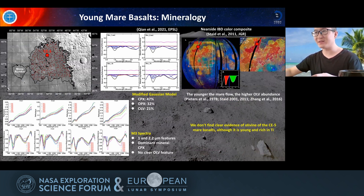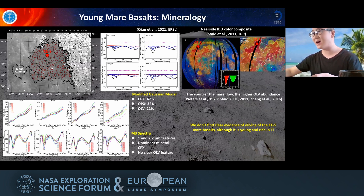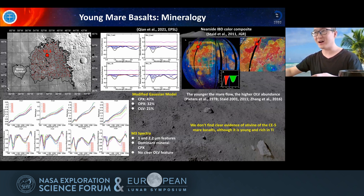I also studied a batch of over 5,500 small fresh craters in this region, using a modified Gaussian model to model the reflectance of different minerals. I found that clinopyroxene is the most dominant mineral in this region, followed by orthopyroxene and olivines. But if you have read some spectroscopy work based on M-cube data, many authors propose that olivine should be very rich in the young mare unit in Oceanus Procellarum, but I don't see much olivine at the Chang'e-5 landing site.